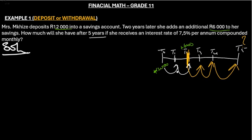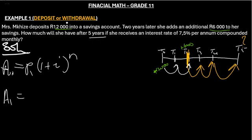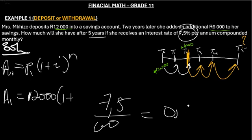We will firstly focus on the first two years. Here A1 is equal to P1 times (1 + i) all raised to the power n. So here A1, we don't know A1. So P1 is the amount that she invested, the principal amount which is R12,000. 1 plus then i is 7.5%. To convert this, because when we substitute it here it should be in decimal, so you say 7.5 divided by 100 then you get 0.075.